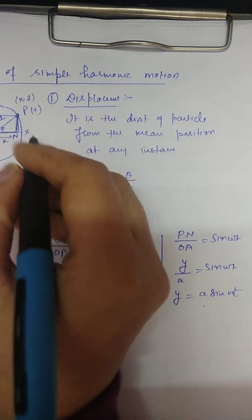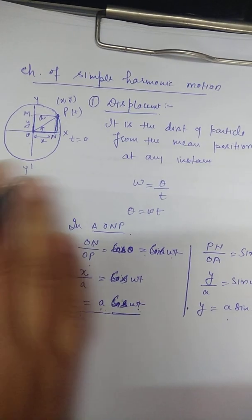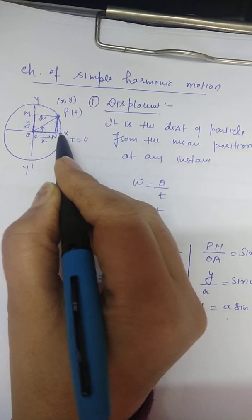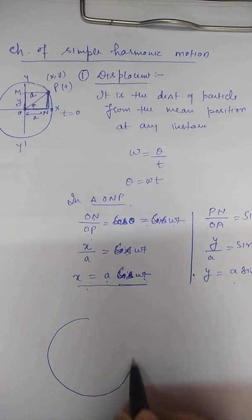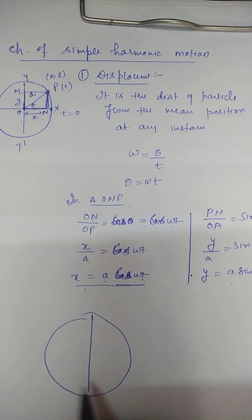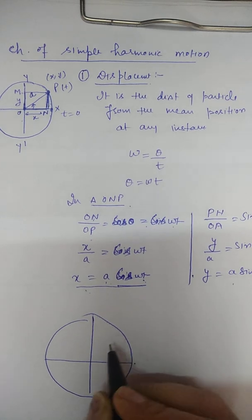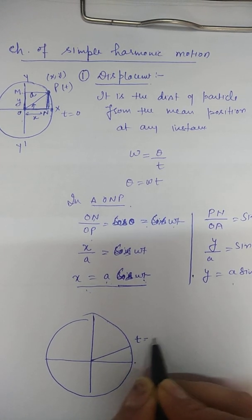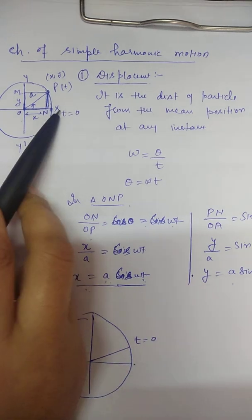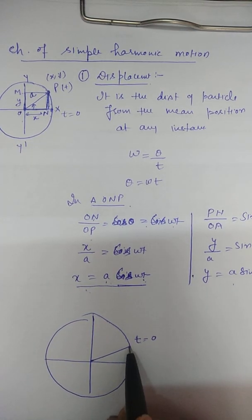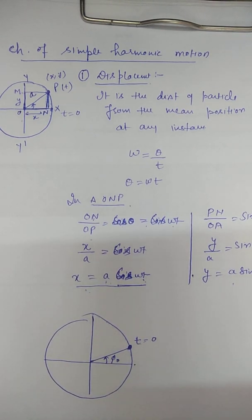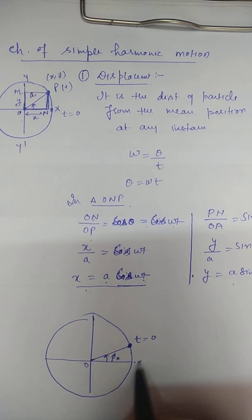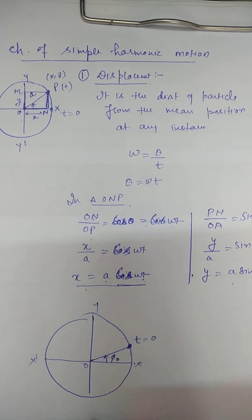We now discuss two cases. Suppose the reference particle at time t, when it starts, has already covered some angle, that is phi naught. So the starting point is above the x-axis, and the axes are x-o-x dash and y-o-y dash.